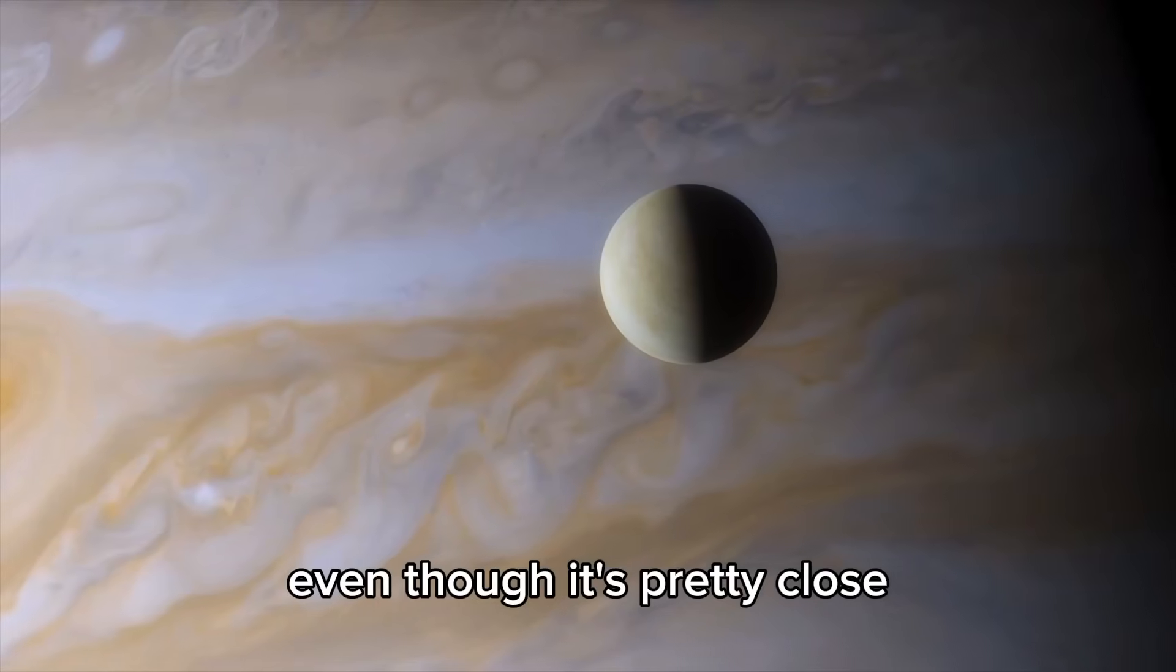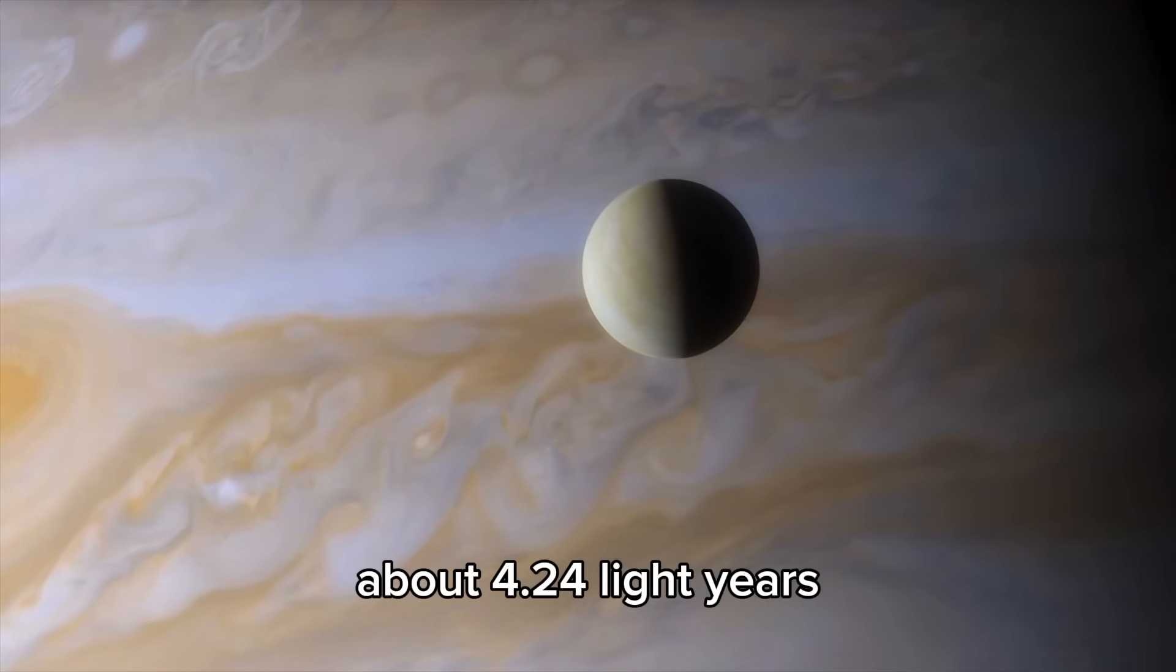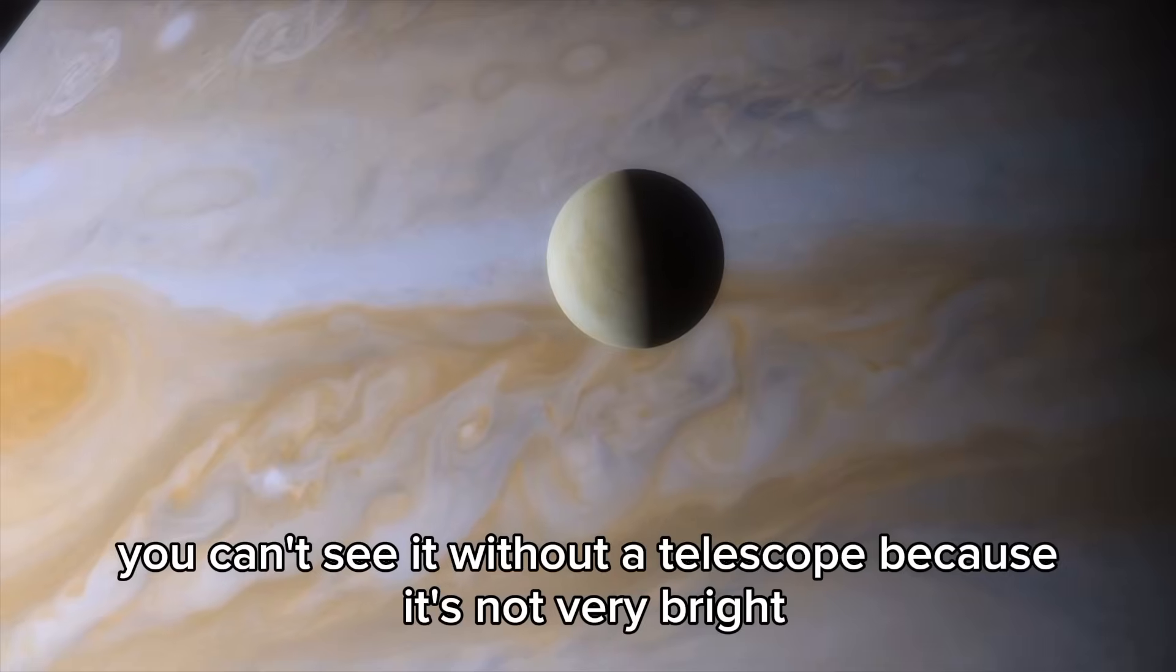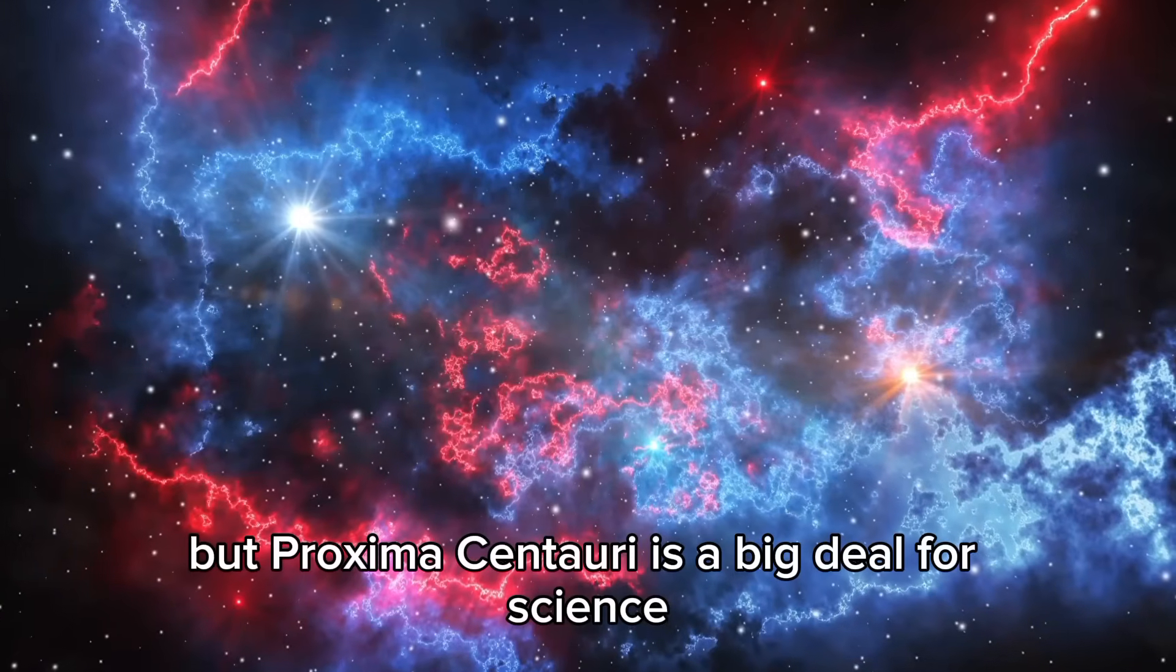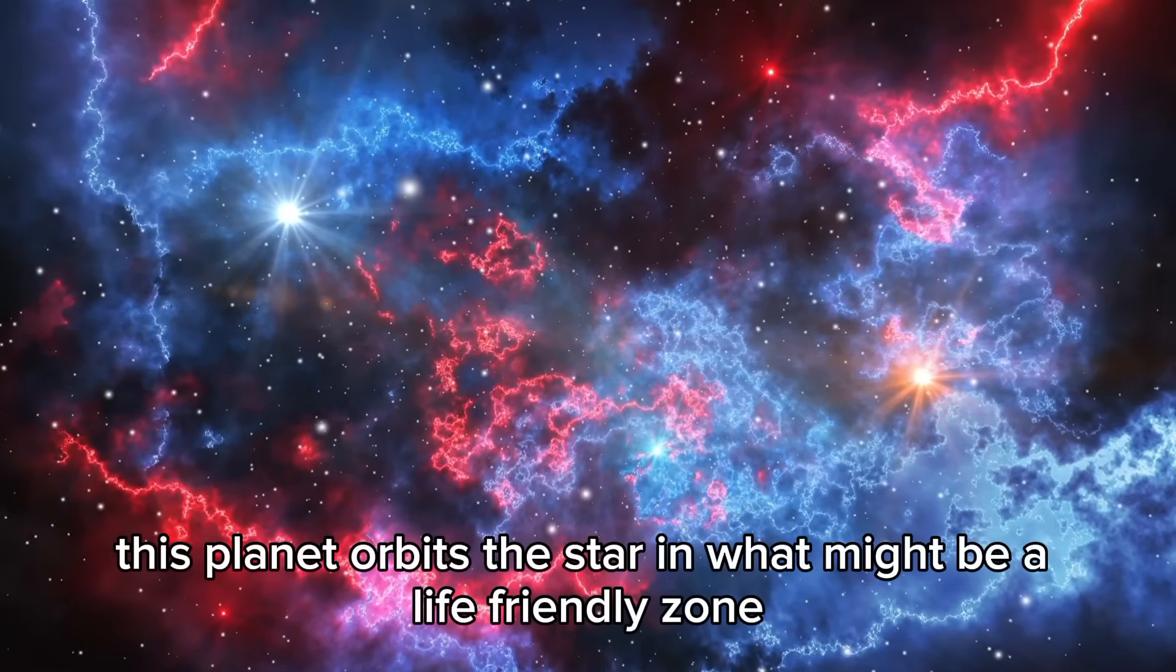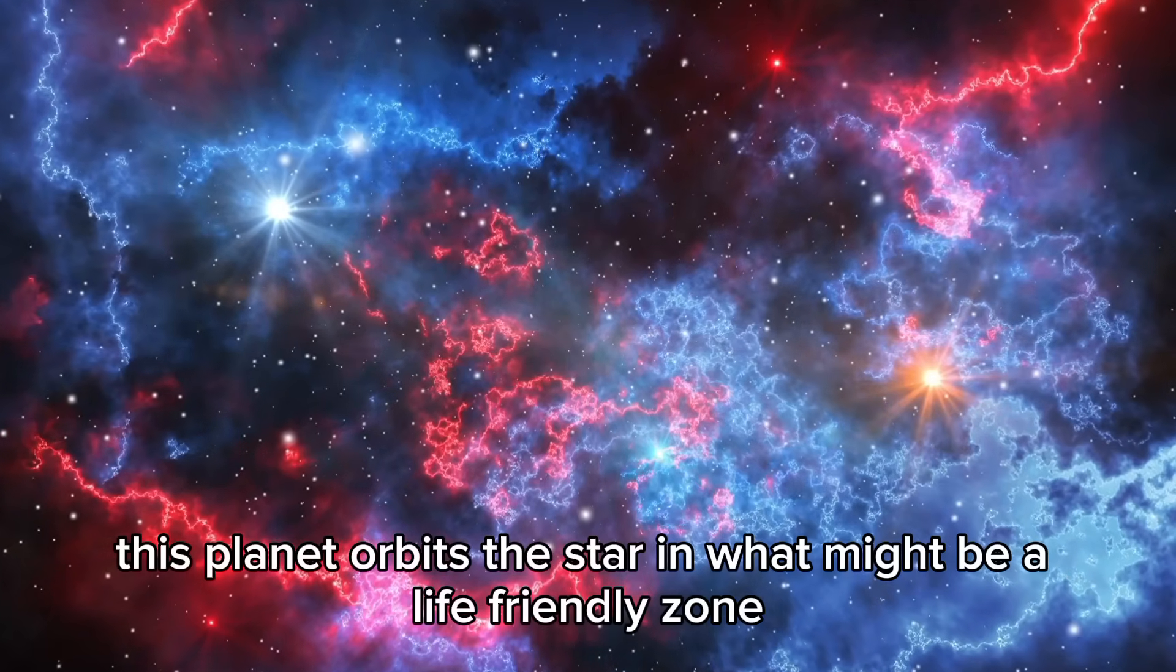Even though it's pretty close, about 4.24 light-years, you can't see it without a telescope because it's not very bright. But Proxima Centauri is a big deal for science because it has a planet called Proxima B. This planet orbits the star in what might be a life-friendly zone.